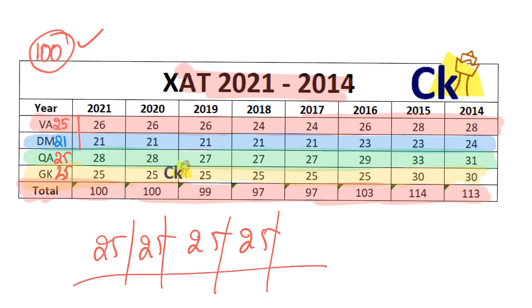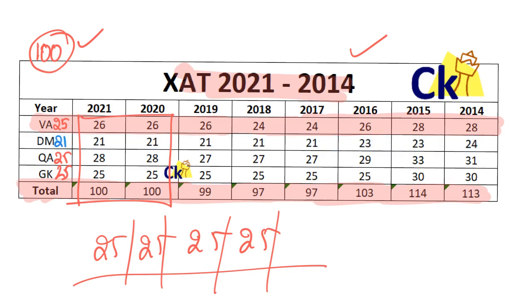If you look at the last two years: 26, 21, 28, 25 — the average will likely remain the same. I'm assuming that because of coronavirus they might change something, so whatever change can happen, we can see it here. This gives you an idea about the type of questions which are coming in the exam.